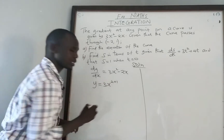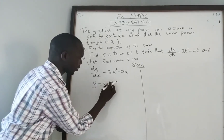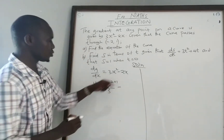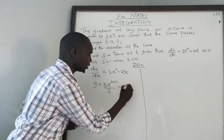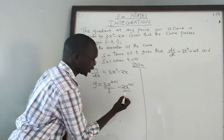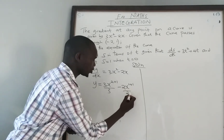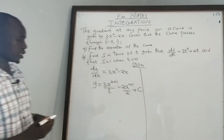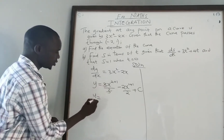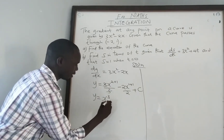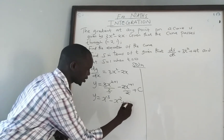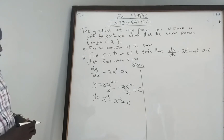Under integration, you increase the power of x by 1 then divide by the total new power. For the 3x squared term, the new power is 3. For the 2x term — which is 2x to the power 1 — we increase the power by 1 and divide by the new power, which is 2, before adding c, the constant of integration. So y equals x cubed minus x squared plus c.